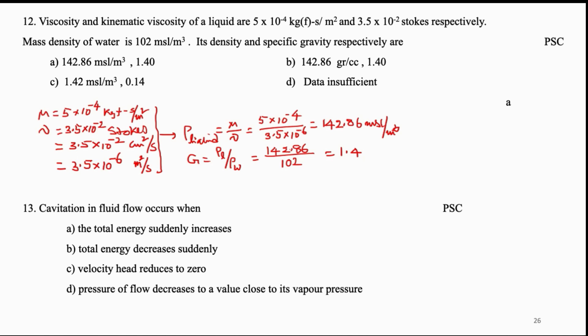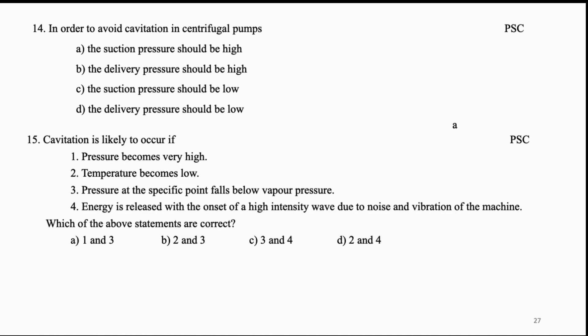Cavitation in fluid flow occurs when: (A) total energy suddenly increases, (B) total energy decreases suddenly, (C) velocity head reduces to zero, (D) pressure of flow decreases to a value close to its vapour pressure. Answer is D. In order to avoid cavitation in centrifugal pumps: (A) suction pressure should be high, (B) delivery pressure should be high, (C) suction pressure should be low, (D) delivery pressure should be low. Answer is A — suction pressure should be high so cavitation can be avoided. Cavitation is likely to occur if: (1) pressure becomes very high, (2) temperature becomes low, (3) pressure at a specific point falls below vapour pressure, (4) energy is released with onset of high-intensity noise and vibration.